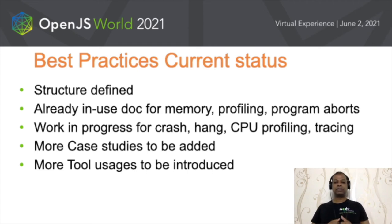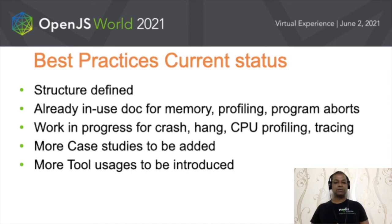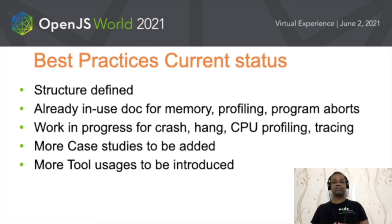Where do we stand with respect to the best practice documentation work? We have some initial structure in place. We have documents ready for a few use cases — for example, memory, profiling, and abnormal termination. We are working on other use cases such as crash, hang, and tracing. For each use case, we can have as many tools as relevant, and from that perspective we can bring in real-world stories as well as demonstrations of different tools solving the same problem in different ways, enriching the consumability of the documentation.